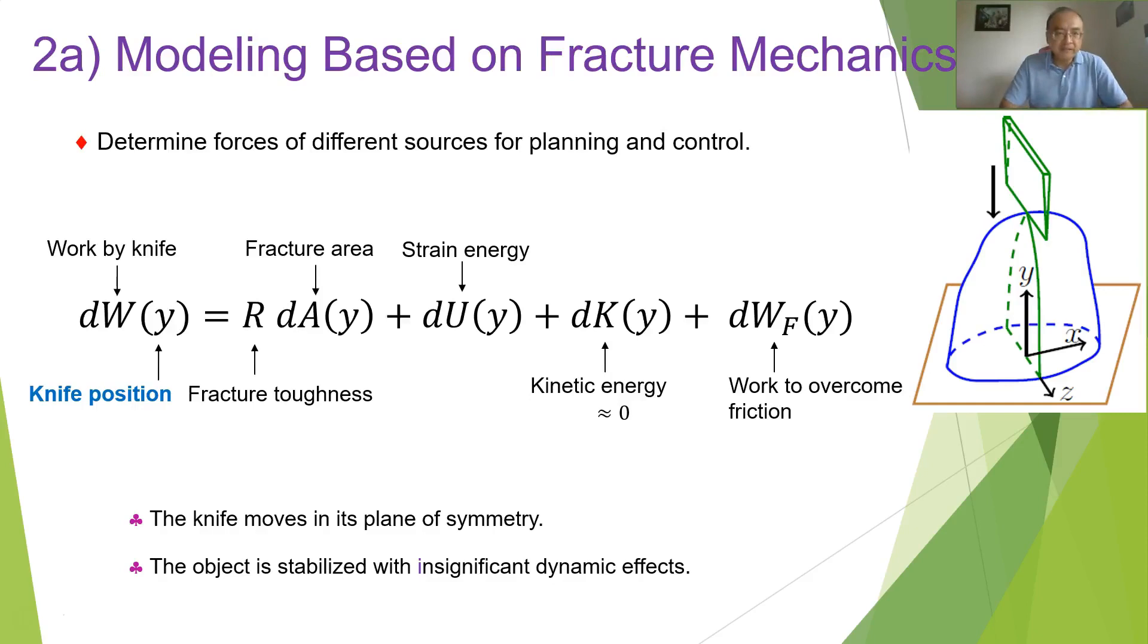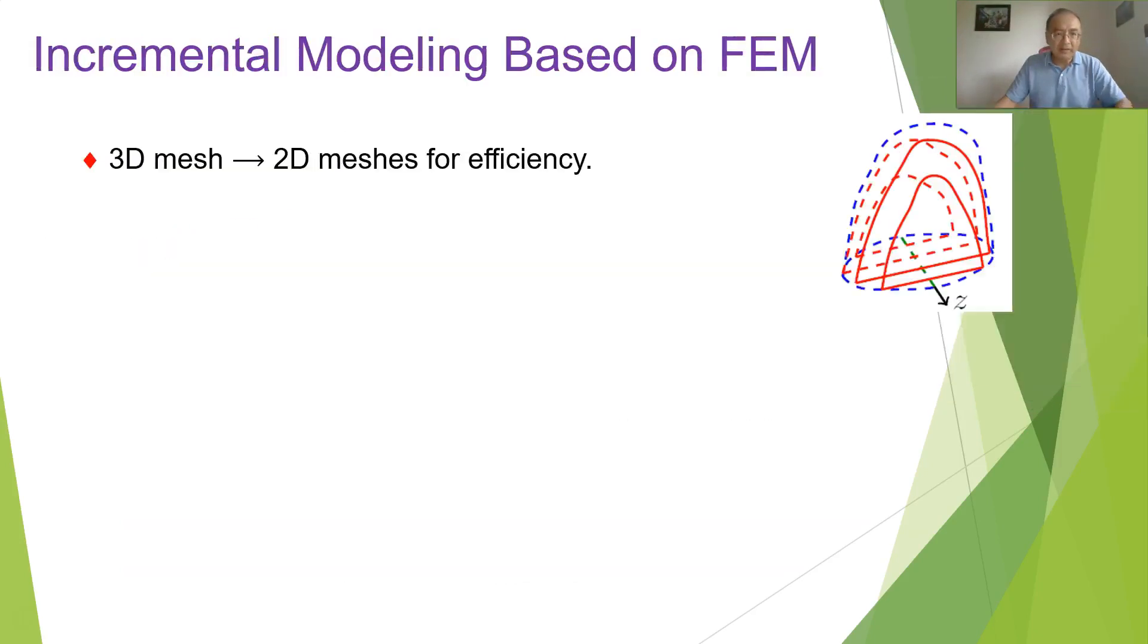All right so what's the purpose of modeling? Because as the blade cutting into the object, the work done by the blade creates fracture as this equation shows and it also changes the shape of the object. So it's going to pump strain energy into the object, and also it may create a velocity of the object generating some kind of kinetic energy and it also has to overcome the friction between the blade and the material. So what we wanted to do through modeling is just basically to determine the forces of these different kinds. So we can identify one force for instance the contact force between the object and the board or between the knife and the board for us to plan the trajectory of the knife and control the knife to ensure that the object is completely separated.